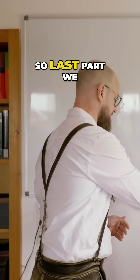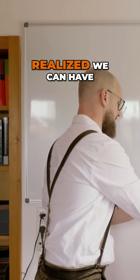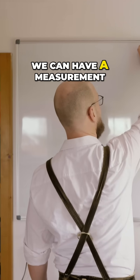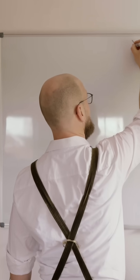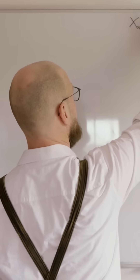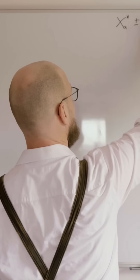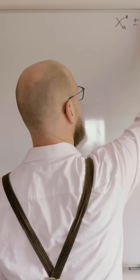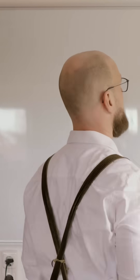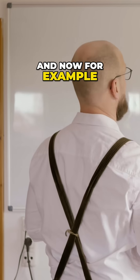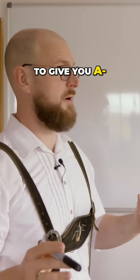So last part we realized we can have some nice things — we can have a measurement 'a' with a certain error delta x a. That's nice.